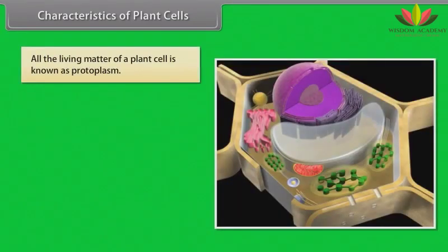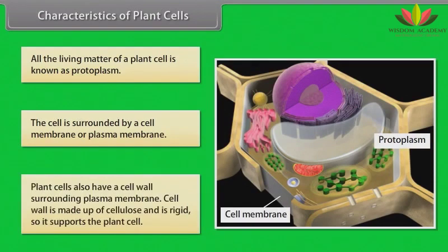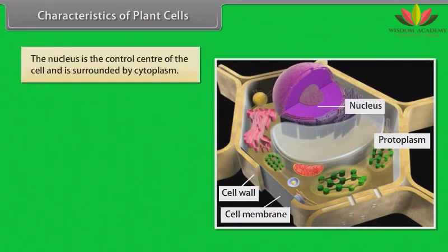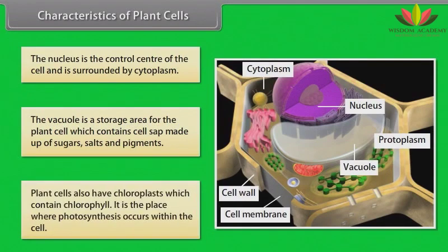All the living matter of a plant cell is known as protoplasm. The cell is surrounded by a cell membrane or plasma membrane. Plant cells also have a cell wall surrounding the plasma membrane. The cell wall is made up of cellulose and is rigid, so it supports the plant cell. The nucleus is the control center of the cell and is surrounded by cytoplasm. The vacuole is a storage area for the plant cell, which contains cell sap made up of sugars, salts and pigments. Plant cells also have chloroplasts which contain chlorophyll — it is the place where photosynthesis occurs within the cell.